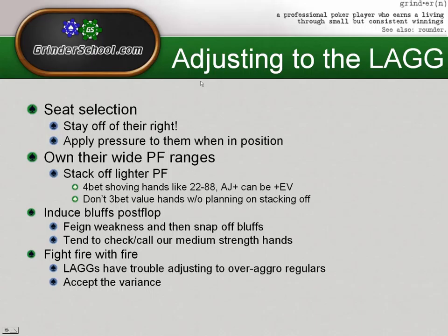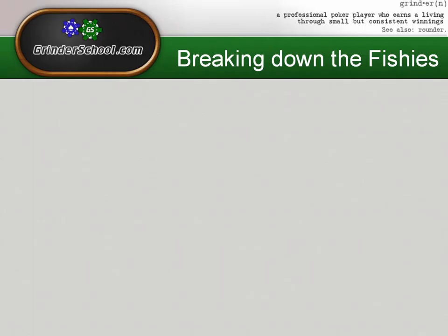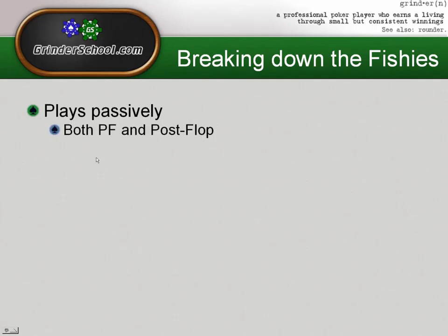Now that we've talked about the regulars — tags, nits, and lags — it's time to really focus on the fish and how profitable it can be playing correctly against the bad players at the table. This is where we can make a lot of money. The typical fish plays passively — very passively pre-flop and post-flop, whether that be limp-calling or calling a lot of raises, then check-calling a ton post-flop with strong hands, weak hands, draws, and so on.